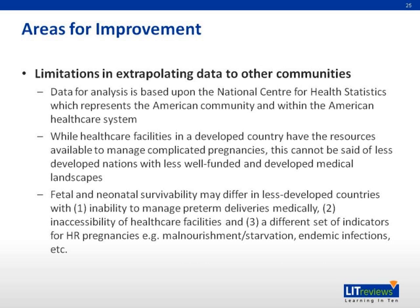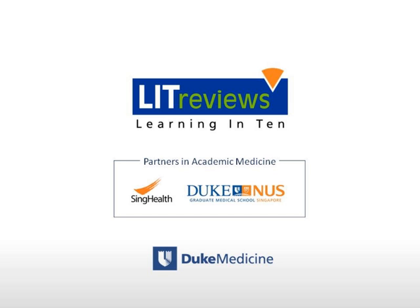Finally, taking a more global view, the data is based on the American community and the American healthcare system. Healthcare facilities in developed countries are more likely to be able to deal with complicated pregnancies and problems associated with prematurity, but the same cannot be said of less developed countries. Furthermore, less developed countries may face other factors affecting fetal and neonatal survivability, such as limited ability to manage premature infants, accessibility of healthcare facilities, and other high-risk indicators like malnourishment, starvation, or endemic infections. Thank you, and we hope you have learned about the factors that could affect the best gestational age for delivery.